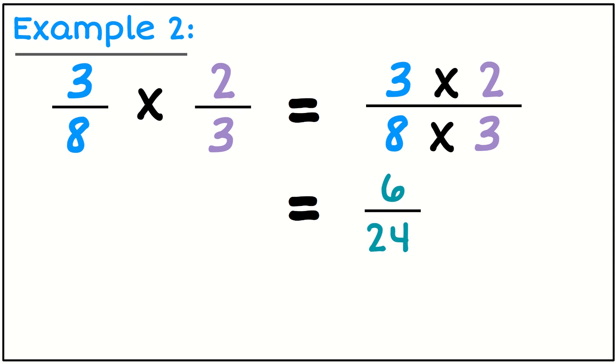Now what I need to do is simplify that. So I look at six and twenty-four and think, what's the highest common factor? The highest common factor is six, so I'm going to divide both top and bottom by six. Six divided by six is one, and twenty-four divided by six is four.